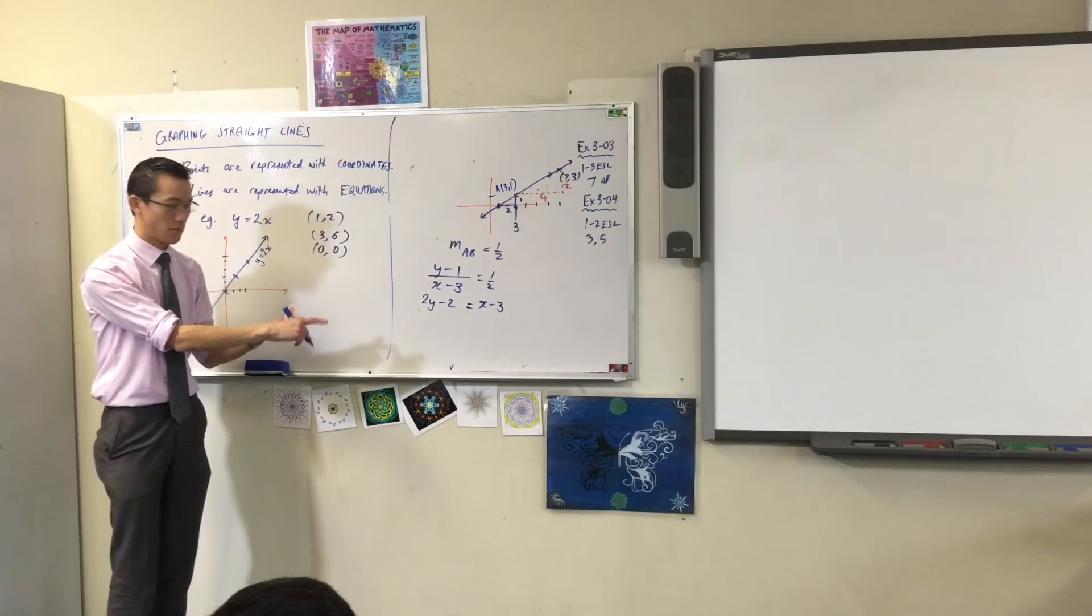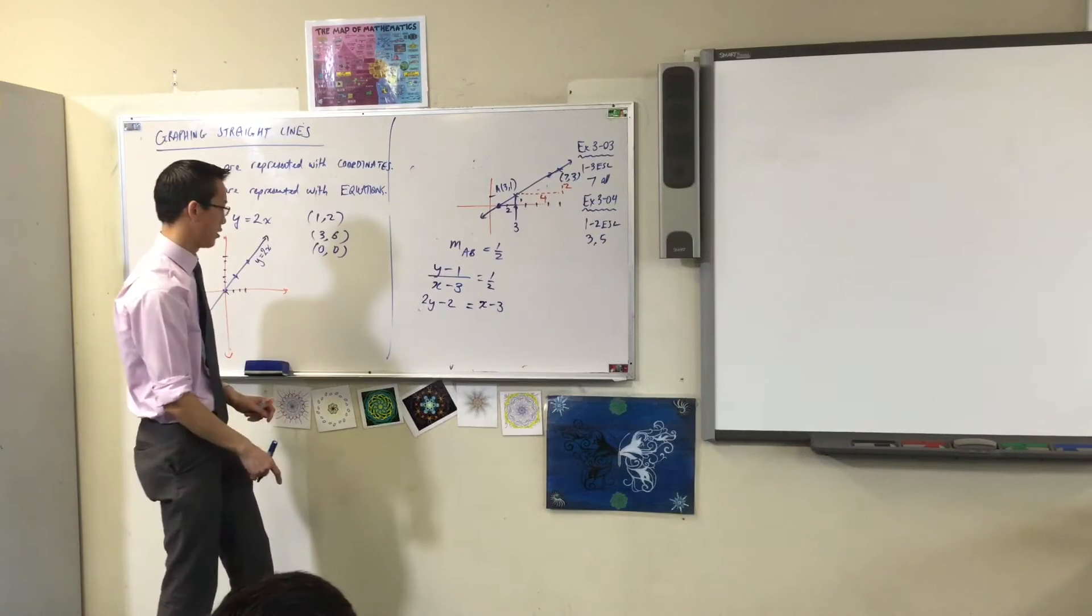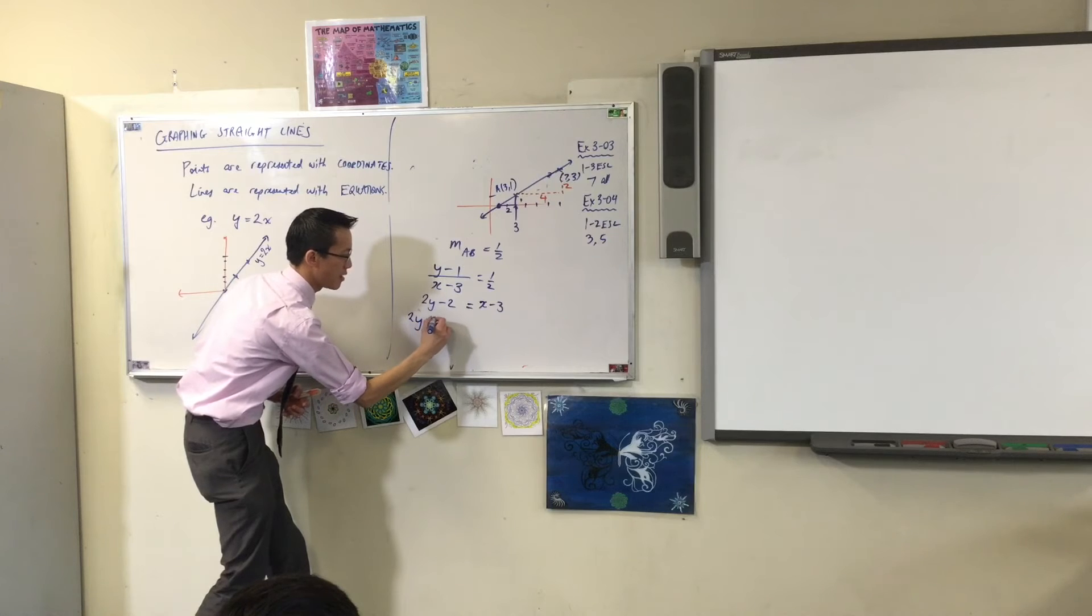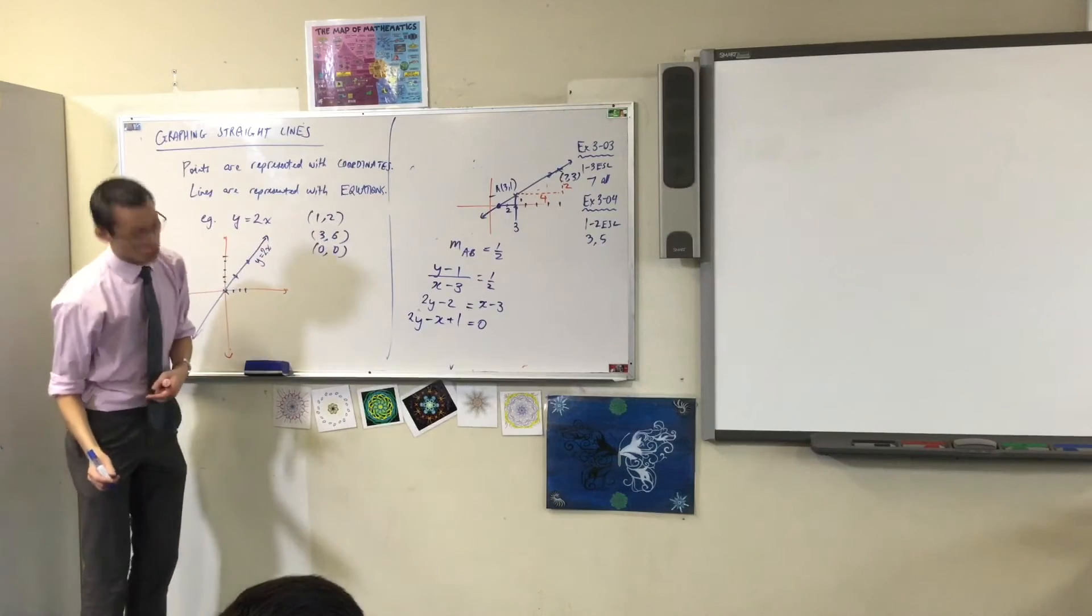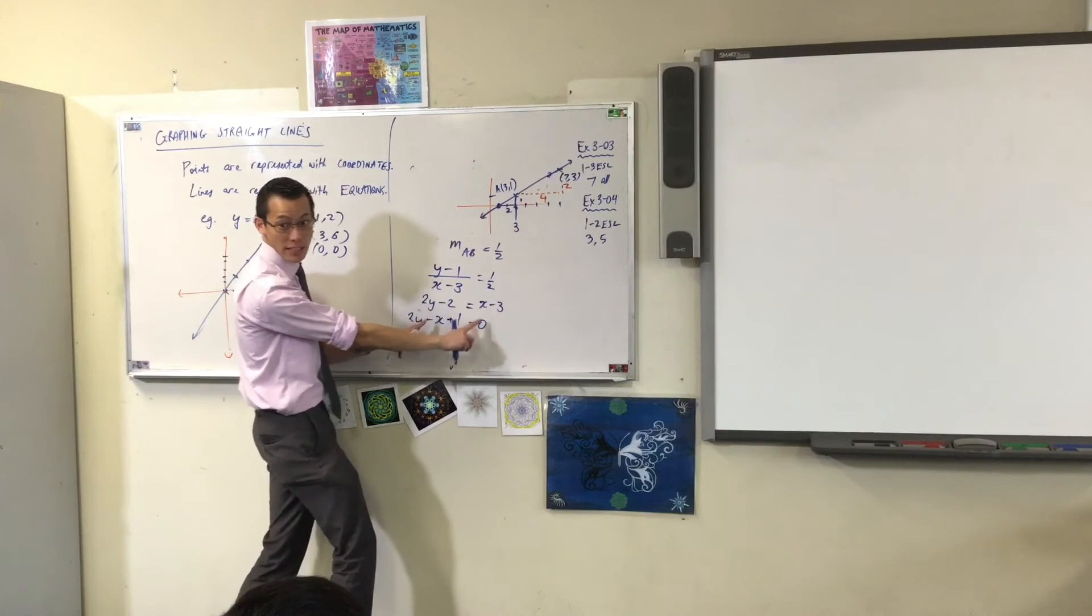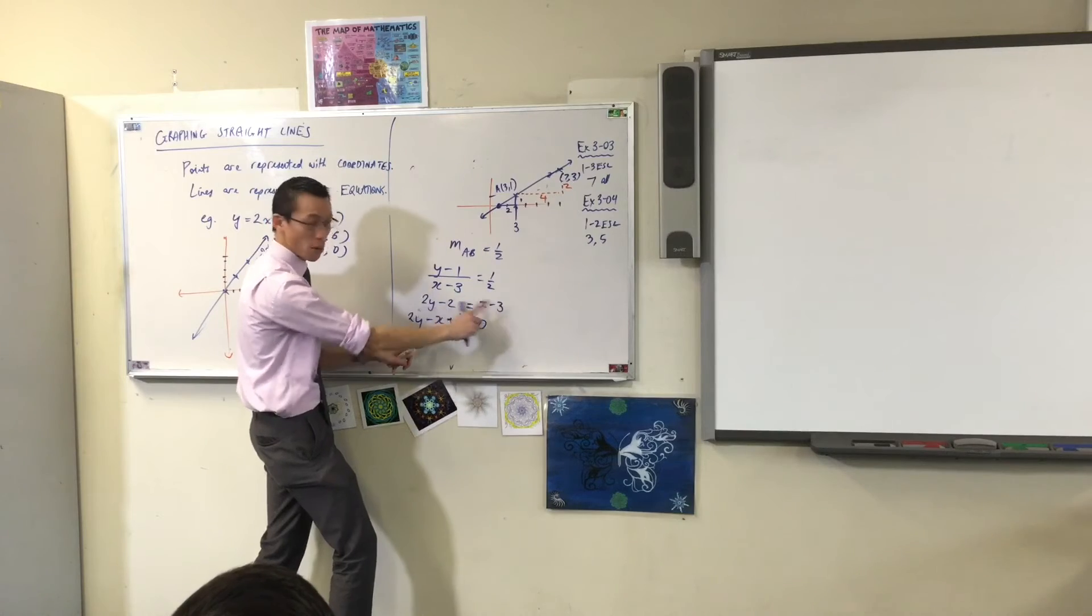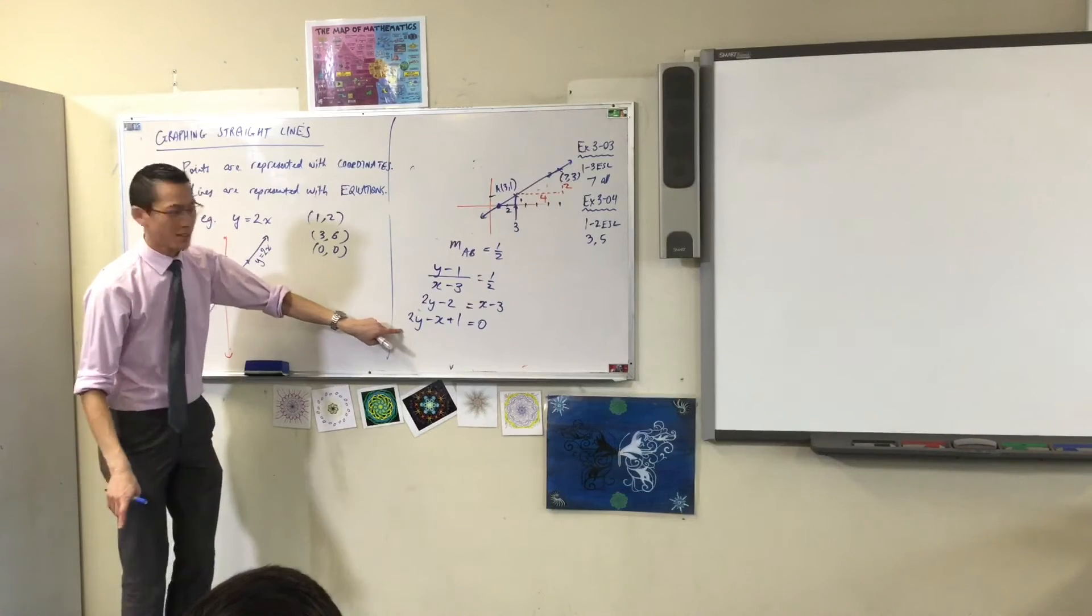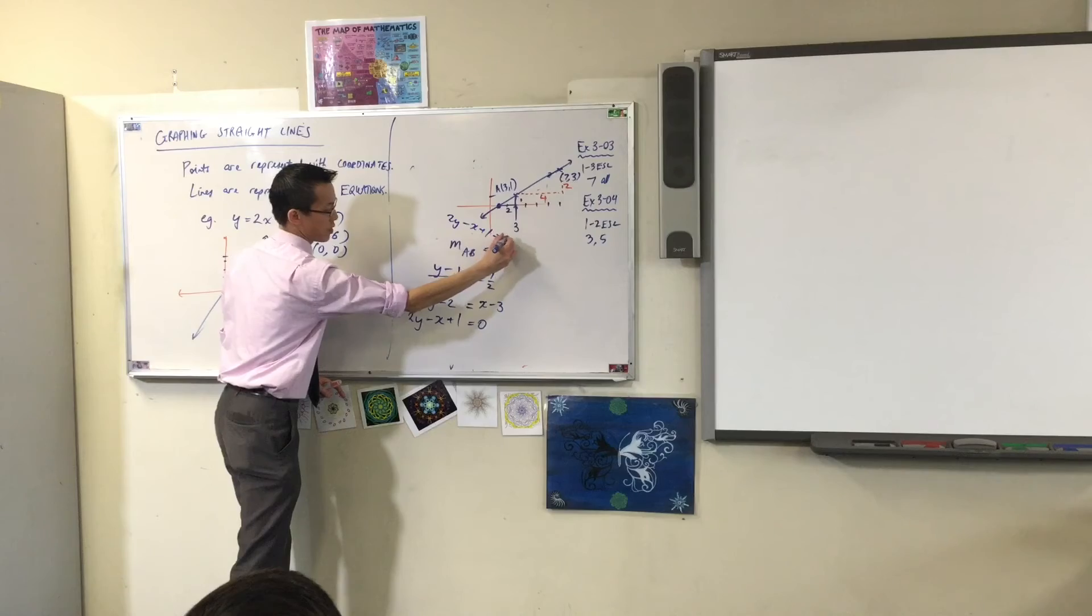Now, this is an equation. This equation is this line. Watch. Let me tidy up a teeny little bit. Let's see here. Let's write it as 2Y minus X plus 1. Just check it out. Is it the same equation? Do you see? I subtracted X from both sides. And then what else did I do? I added 3 to both sides. So, that's why it's plus 1. Are you okay with that? Now, look. This equation is this line. 2Y minus X plus 1 equals 0.